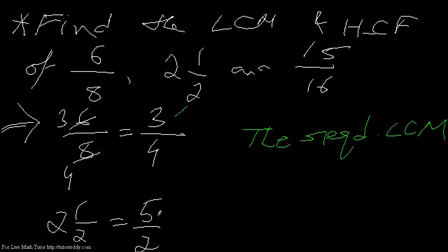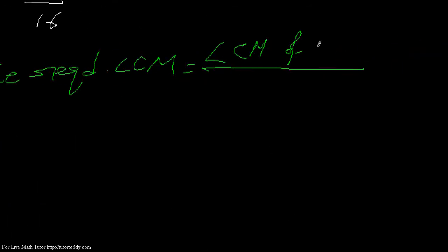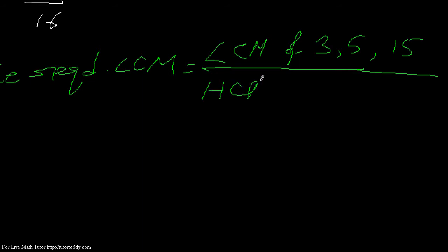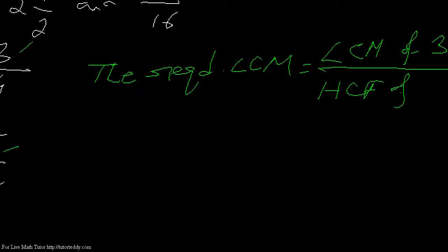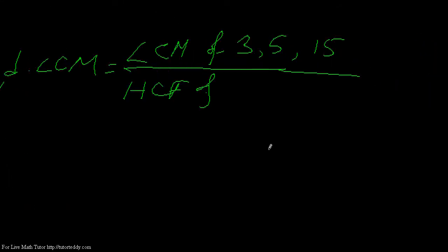The numerators are 3, 5, and 15. The denominators are 4, 2, and 16. So the required LCM equals the LCM of 3, 5, 15 divided by the HCF of the denominators 4, 2, 16.